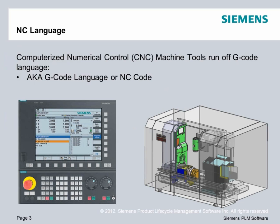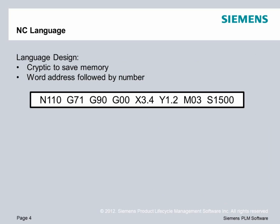Other names for this are the G-code language or NC code. And typically it involves creating code that drives a computerized numerical control or CNC machining center. The language design for G-code language or NC language is very cryptic. It was designed that way because the original machine tools didn't have a lot of computer memory. And typically it's a word address followed by a number. Here's a typical line of code that you might see in NC code language.